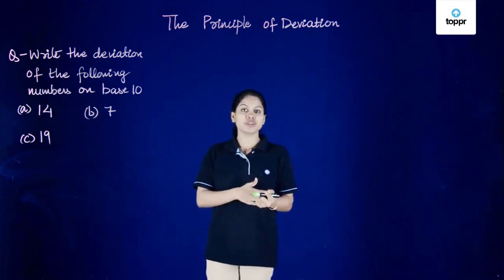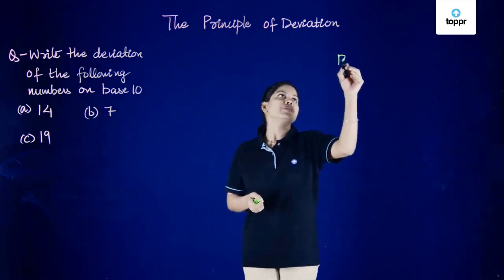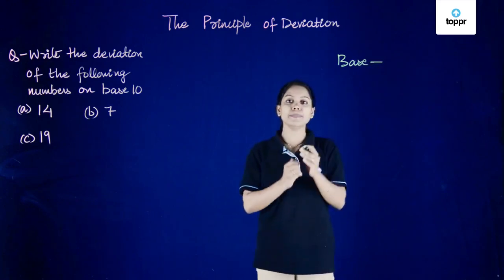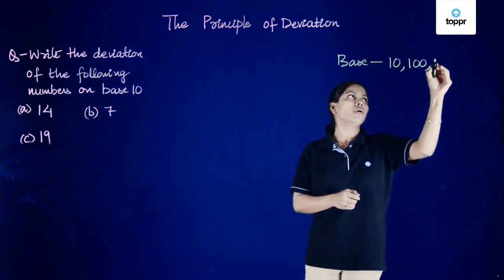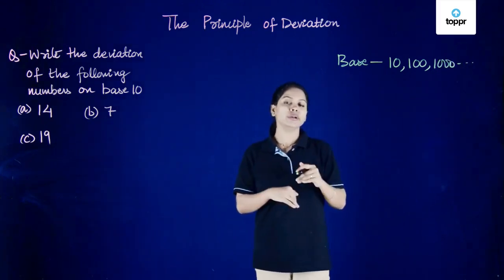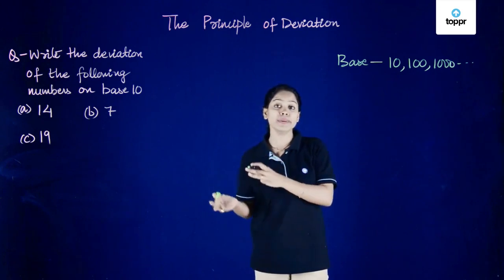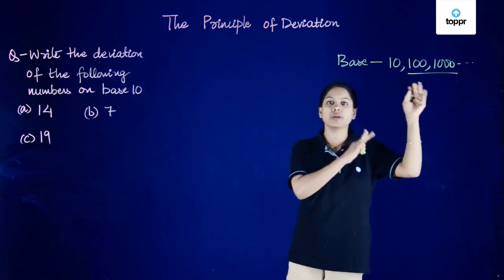In order to know what's deviation, we must know what is meant by base. By base we refer to any power of 10, so it can be 10 or 100 or 1000 and so on. But for us we'll only be considering base 10 for now.